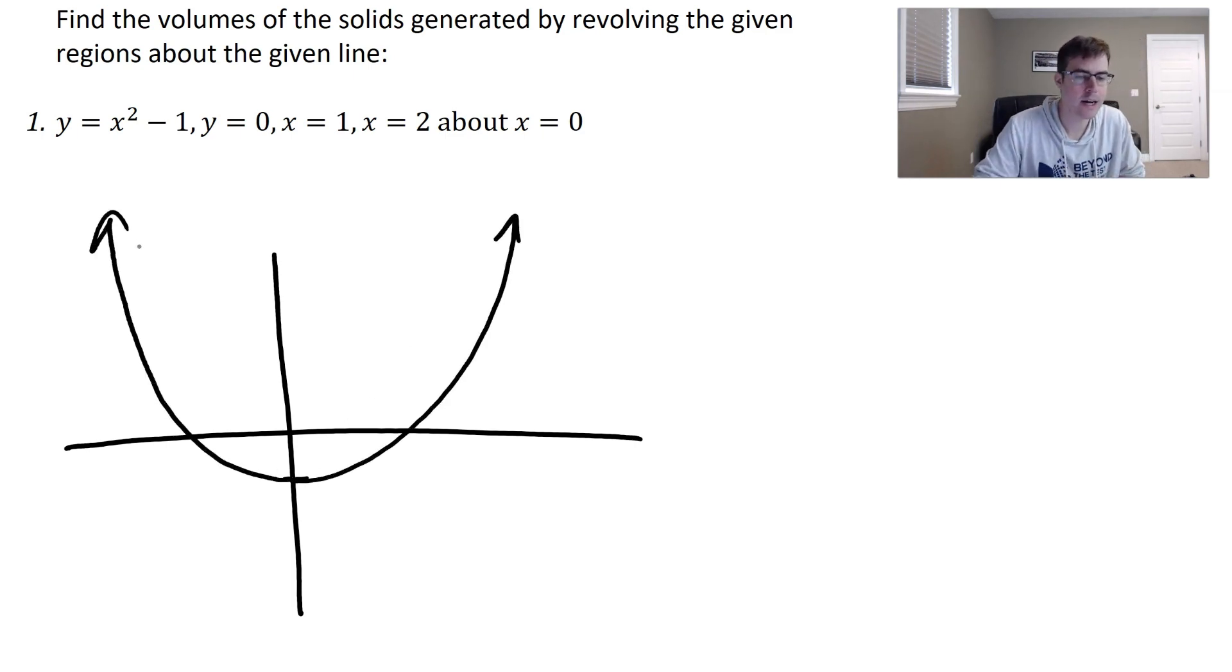There's our region here, but we're bounded by x equals one. Now you notice when you put in x is one, one minus one would be zero, so that's right here. This is at one, and x is two. So we're talking about this region from one to two over here, which is this region,